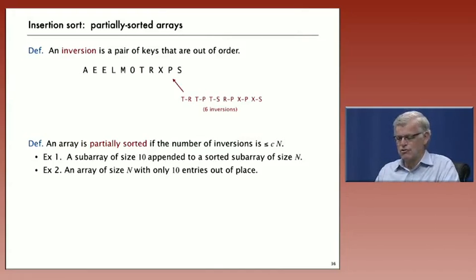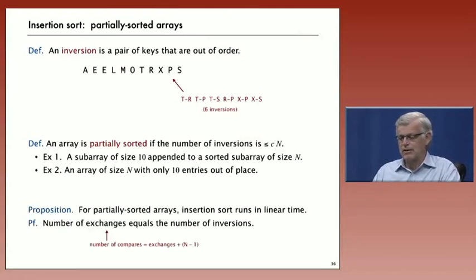And partially sorted arrays appear often in practice. For example, if you have a large array that's sorted except for just a few unsorted elements appended at the end, it's going to be partially sorted. Or another case is if you only have a few entries out of place, the array is going to be partially sorted. Now these types of things arise often in practical applications.